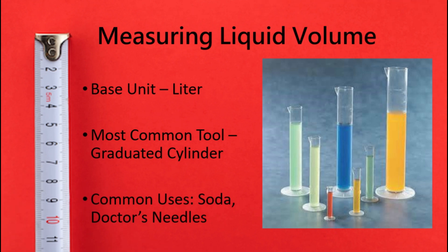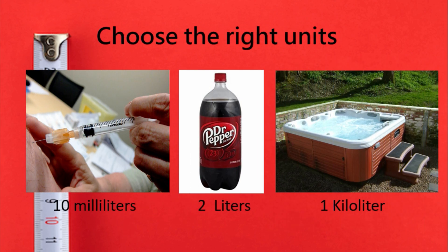The base unit liter helps us measure liquid volume, or the amount of space a liquid takes up. We typically use a graduated cylinder to help us with this — it looks like a test tube with a base. Common uses where you might see metric volume units include soda and doctor's needles. A doctor's needle might show 10 milliliters. We're also familiar with the 2-liter soda bottle. And we can also see a kiloliter in the size of a hot tub — that would be 1,000 liters.